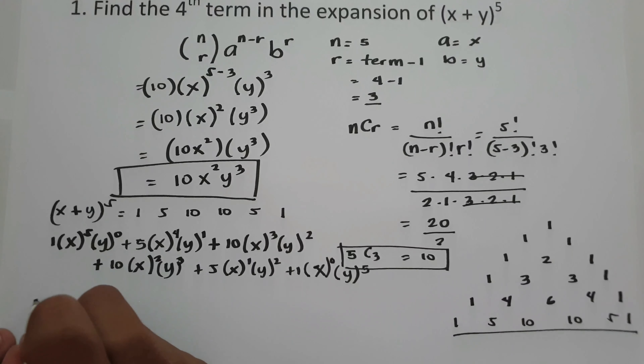So we have 5 times 2x raised to 1 (that is 5 minus 4), times negative 3y raised to 4. Negative 3 raised to 4 is 81, so we get 5 times 2x times 81y raised to 4. That is 5 times 2x equals 10x, times 81y raised to 4. So 10 times 81 is 810. The fifth term is 810xy raised to 4.